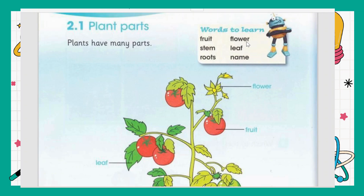Let's review the words we have learned: fruit — F-R-U-I-T, flower — F-L-O-W-E-R, stem — S-T-E-M, leaf — L-E-A-F, roots — R-O-O-T-S, name — N-A-M-E. You should remember these names of the parts of plants. Later we can draw a plant and label which is the fruit, which is the flower, which is the stem. I hope you liked this video — thank you!